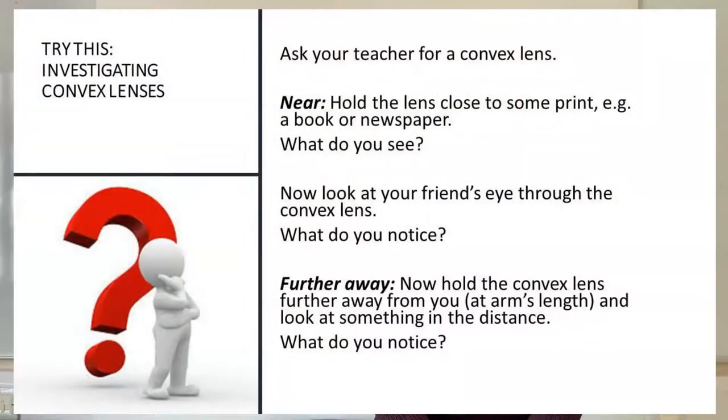Ask your teacher for a convex lens. Hold the lens close to some print. What do you see? Now look at your friend's eye. What do you notice? Now hold the convex lens further away from you at arm's length and look at something in the distance.